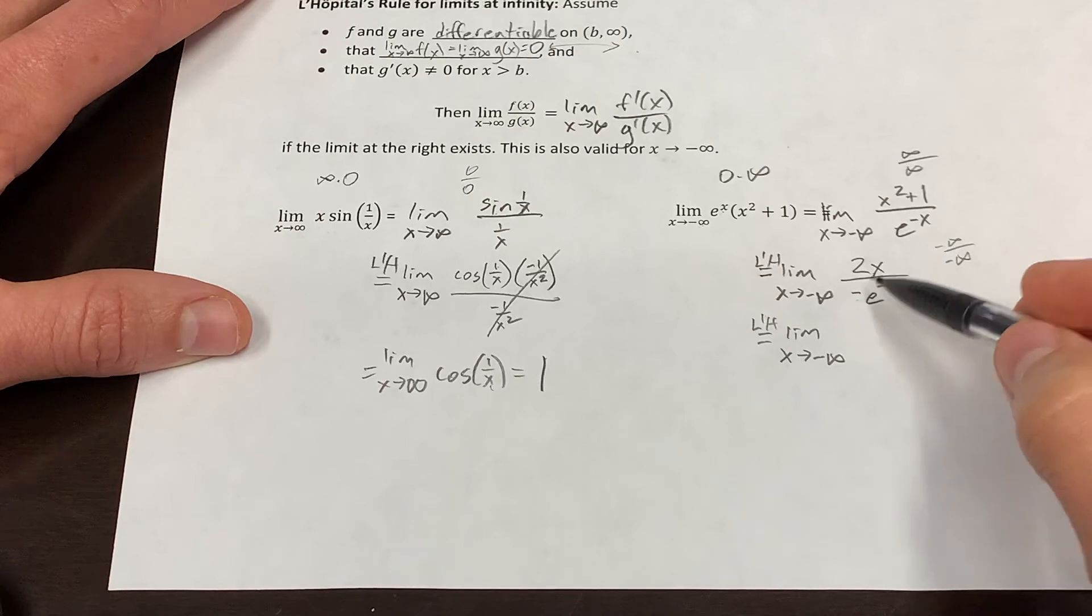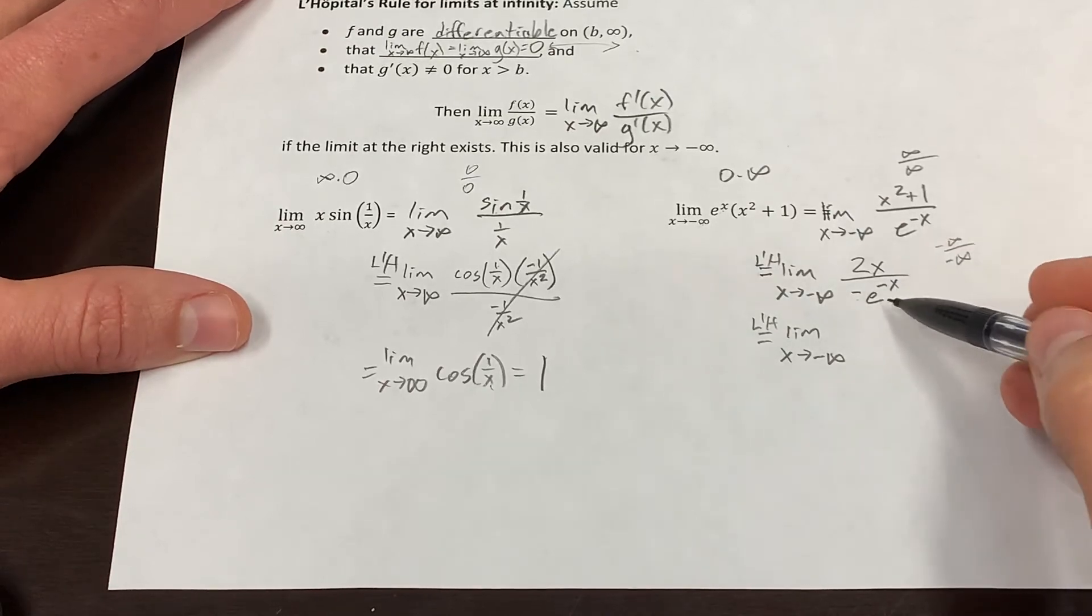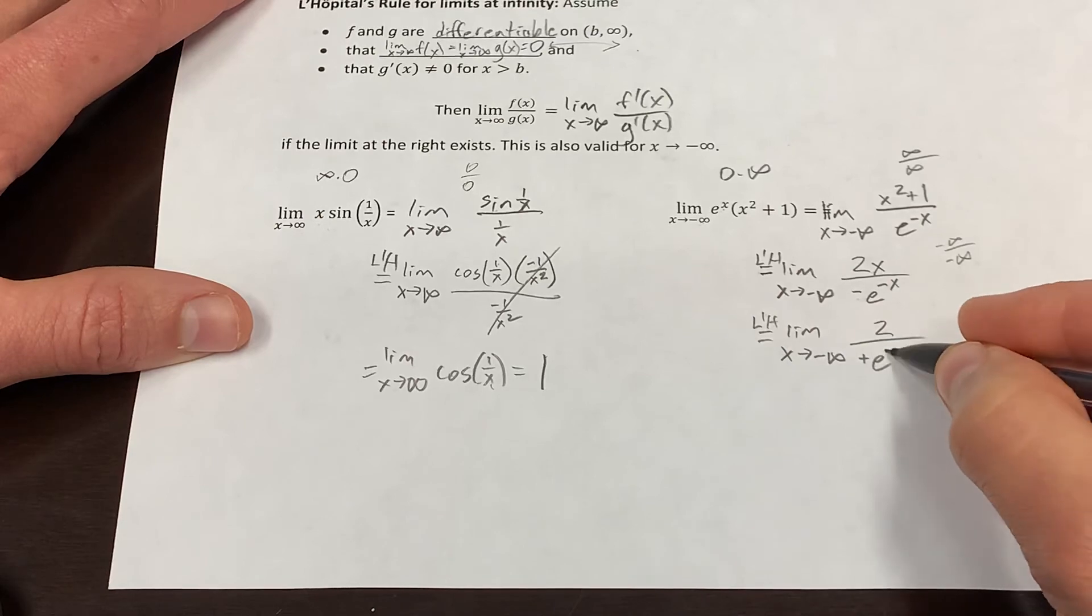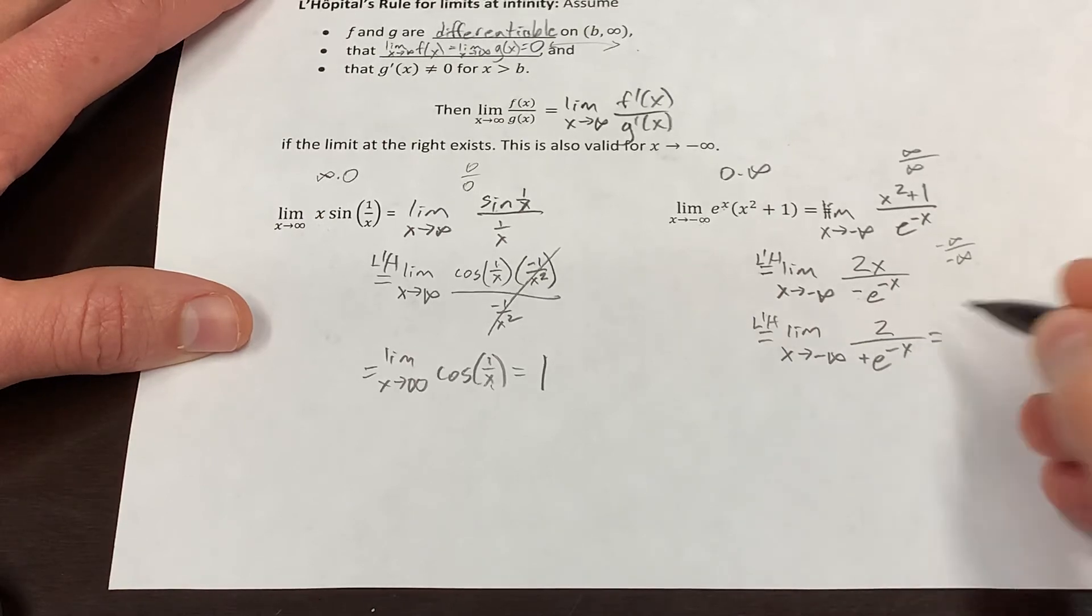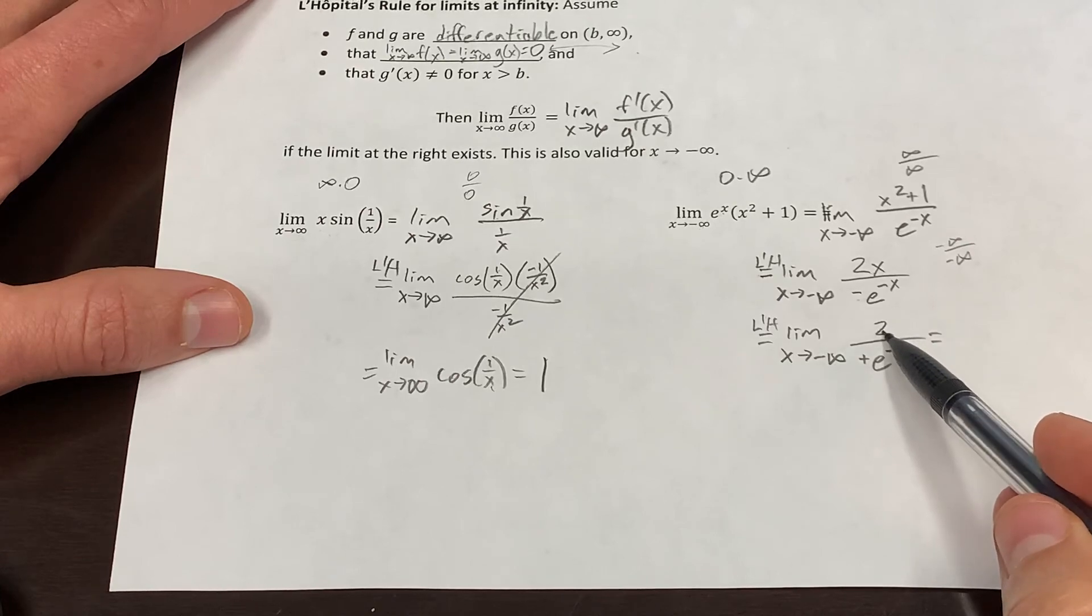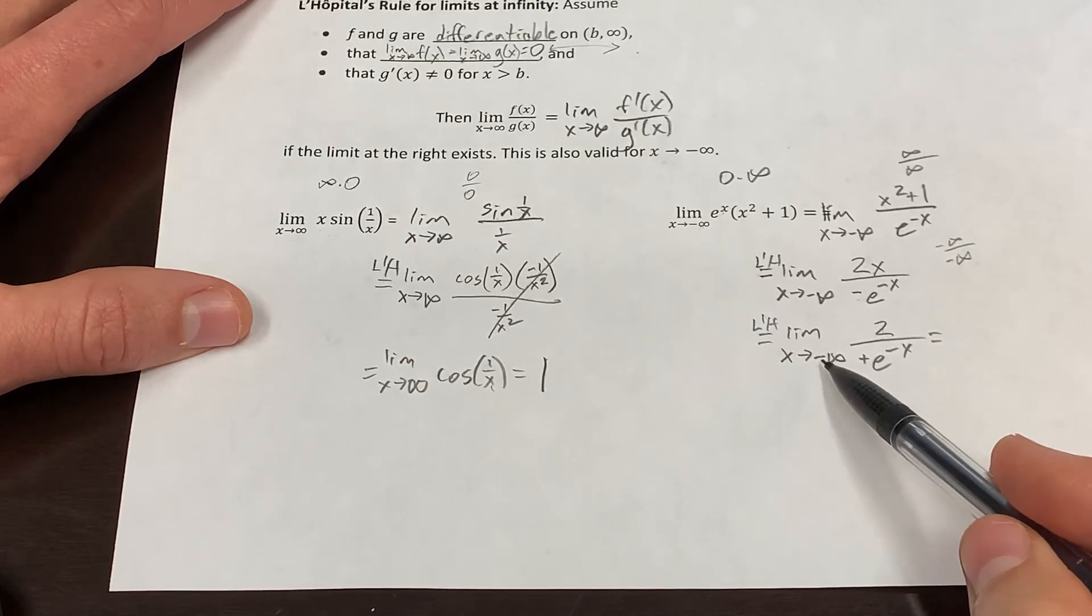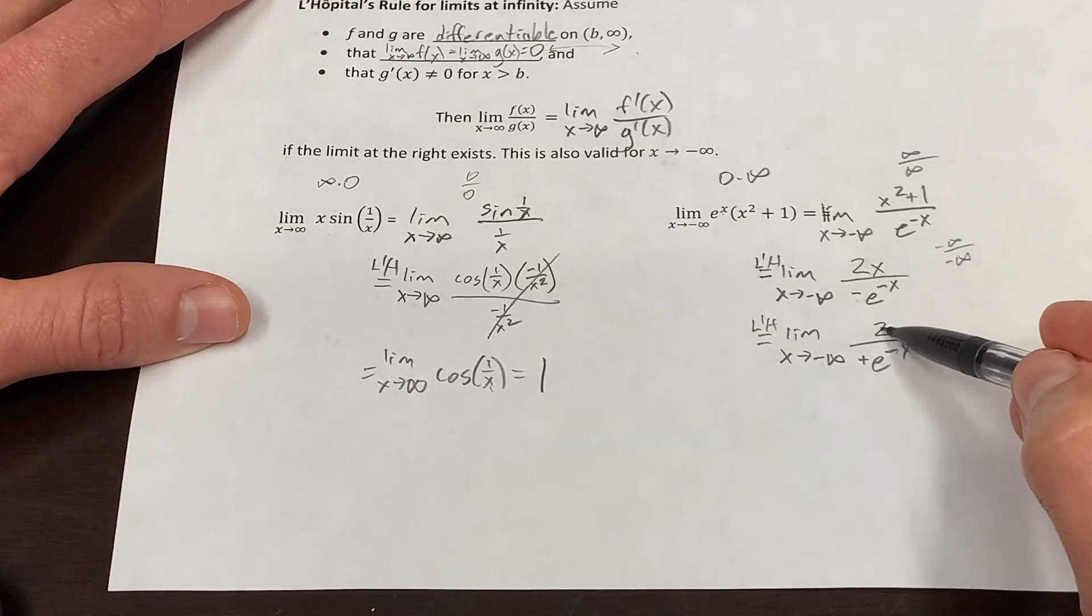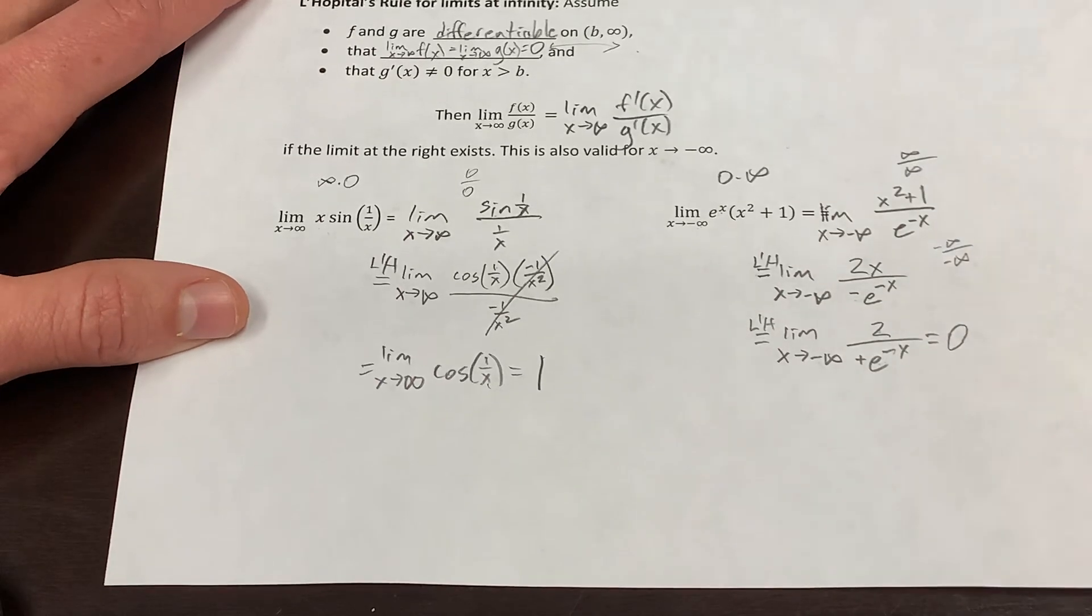And by the way, since e to the x grows so much faster, when you've got a polynomial, you know it's going to win out in the end. Now we've got positive e to the negative x. Now we can just look and see what happens. That stays put at 2. This term, the negatives cancel, so you're looking at e to something approaching infinity. The numerator stays put, the denominator approaches infinity, so the whole thing approaches zero.